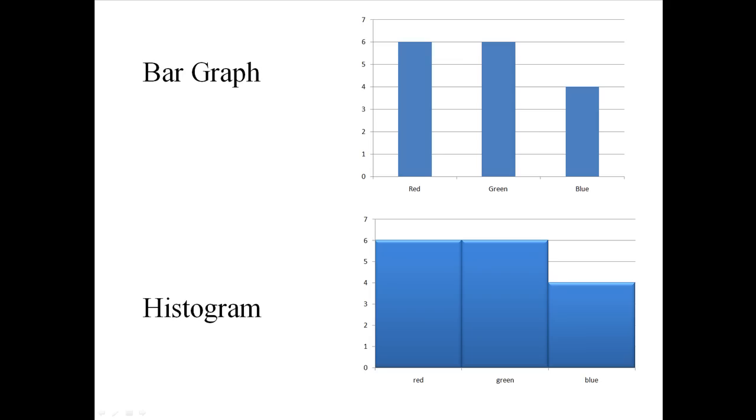For example, on top here we'd have a bar graph, and on the bottom we'd have a histogram. The only difference would be that the top is using qualitative data, while the bottom is using quantitative data.